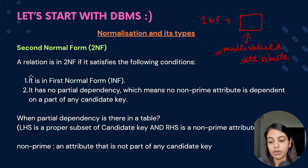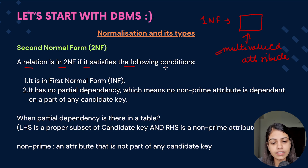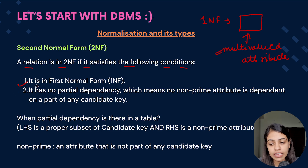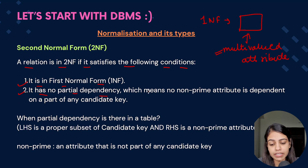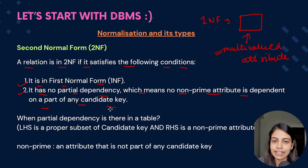Now coming to the second normal form. A relation is in second normal form if it satisfies the following conditions. The first condition is it should always be in first normal form, and the second condition is it should not have any partial dependency, which means no non-prime attribute is dependent on any part of a candidate key.